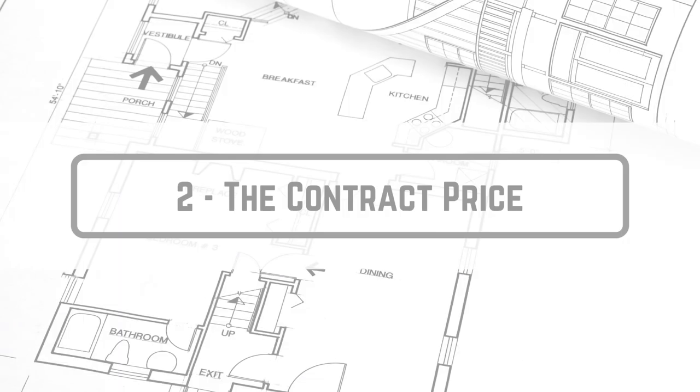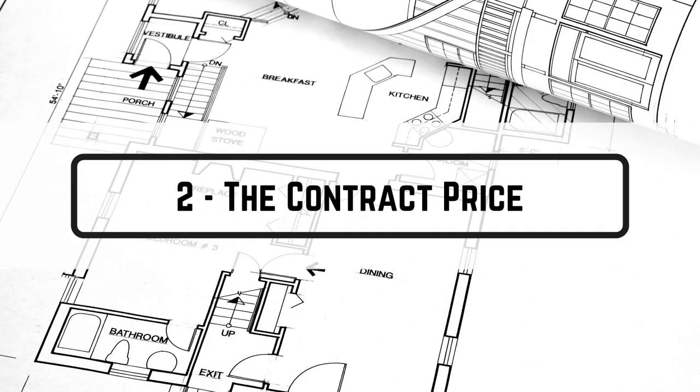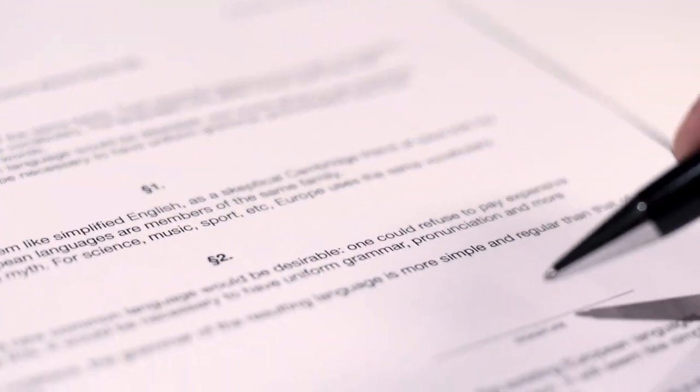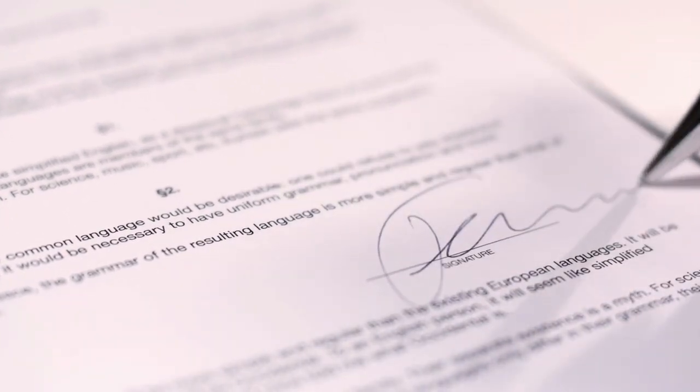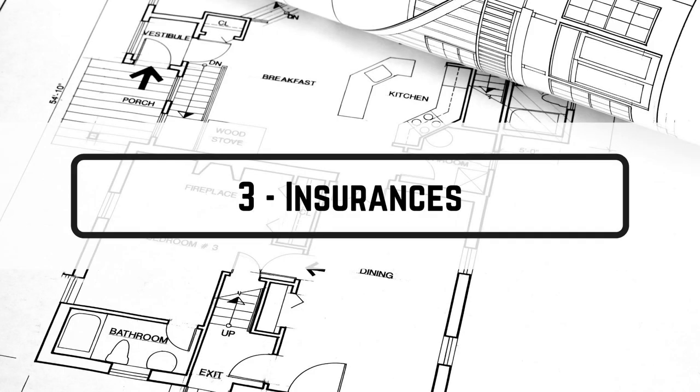The second term to pay attention to is contract price. Whether the contract is lump sum or remeasured, there will be a contract price. In remeasured contracts, you will need some tentative quantities in the beginning to establish the contract price. How much is the value of the works — the contract price — is a very important part of the commercial terms.